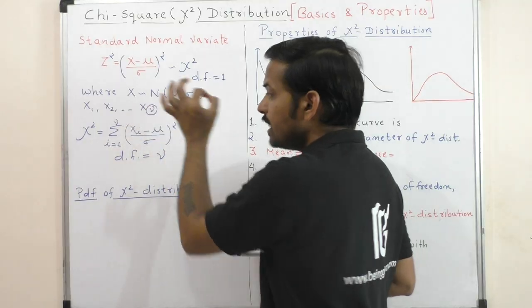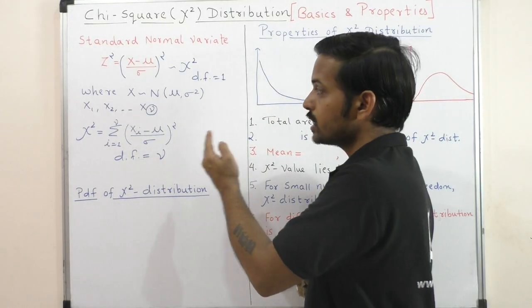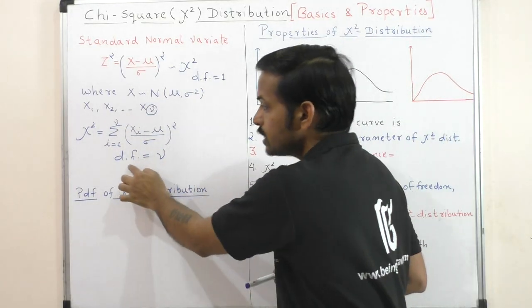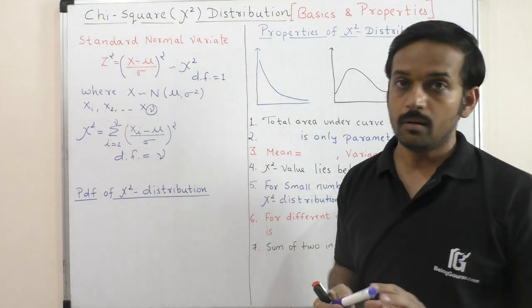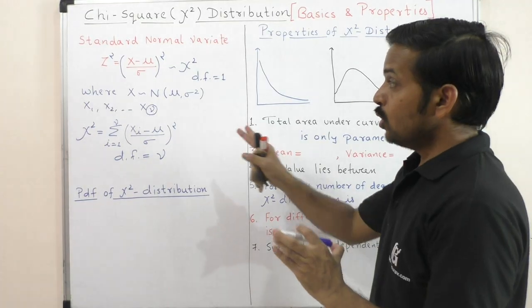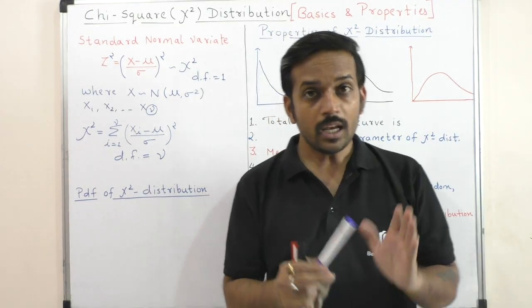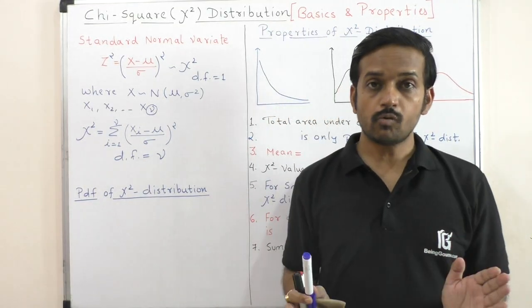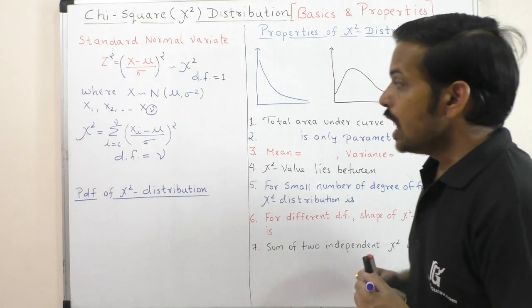In any textbook, n random variables X1, X2, ..., Xn will be given. In that case, the degree of freedom will be n. This is our chi-square distribution — obtained by squaring and summing standard normal variates — and we get chi-square distribution.